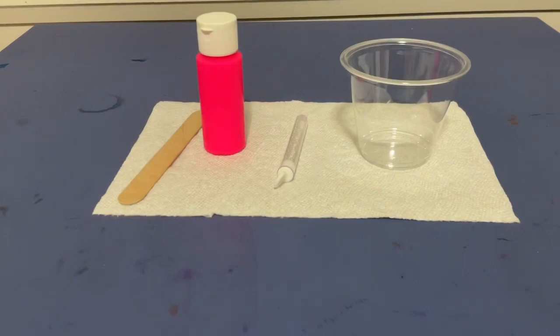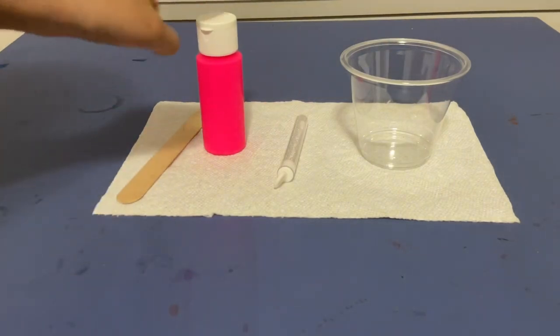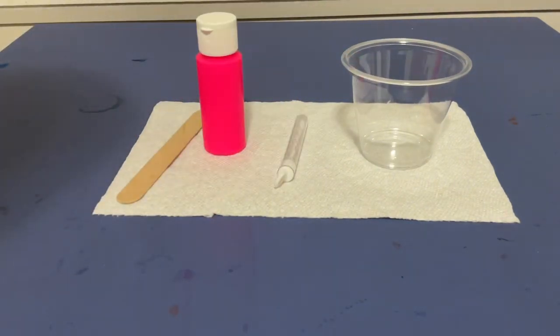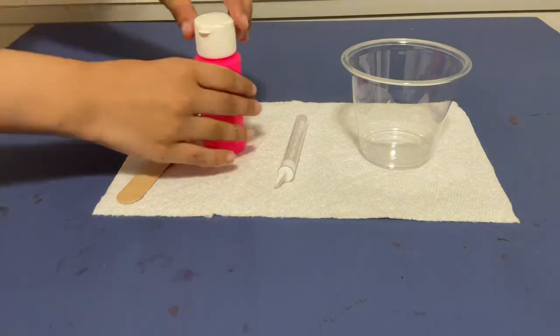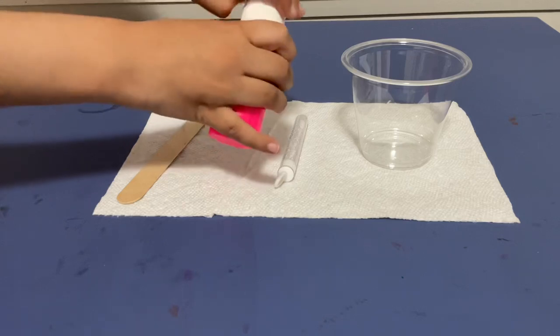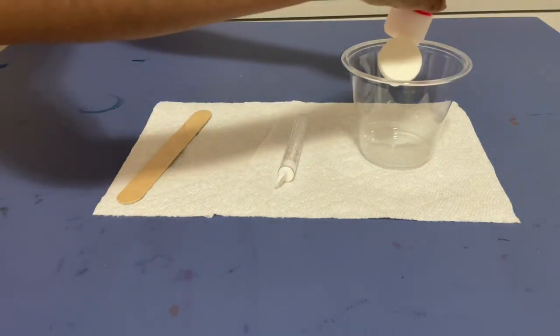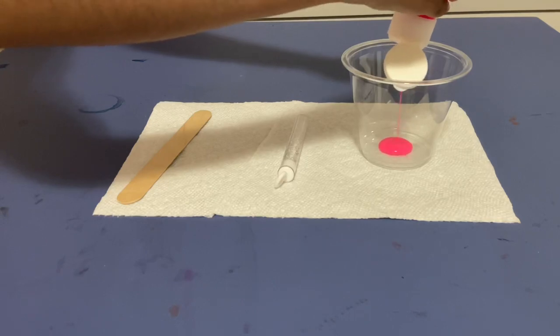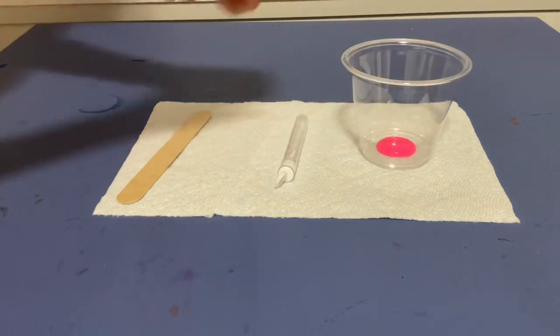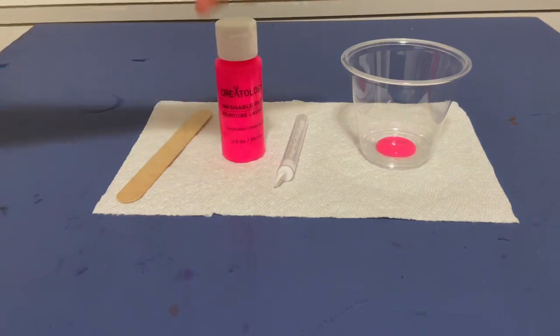For step one, we're gonna grab our popsicle stick, paint, bubble mix, and plastic cup. So we're gonna prepare the paint. What we're gonna do is take our paint and just put some in our cup, not too much, just a little bit. A few drops should be good. Just like this.